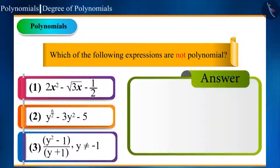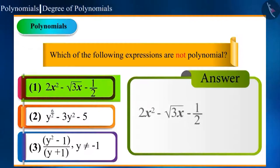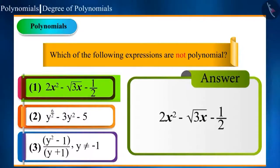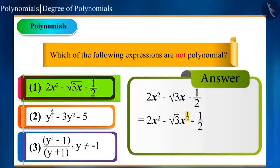The first option is 2x square minus square root of 3x minus 1 by 2. Here, in the second term, x is also within the root with 3, which means the power of x is 1 by 2, which is not a whole number. So, it is not a polynomial.